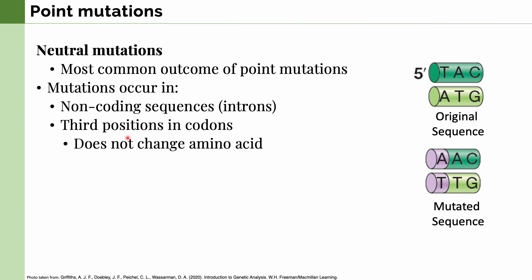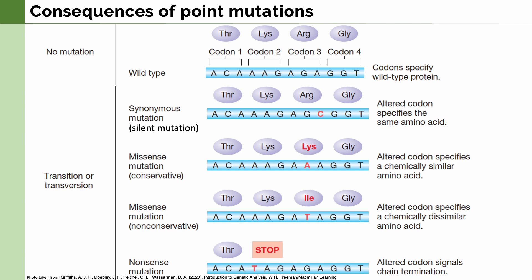As a result of neutral mutations, the amino acid coded for by the gene does not change, and they do not produce any noticeable effect on the cell. In this figure, we can see the different consequences of point mutations, starting with transitions or transversions. At the top is the original gene sequence and the corresponding amino acids. The first effect is called synonymous or silent mutations. They do not affect the cell in any meaningful way because the altered codon specifies the same amino acid — usually when the mutation is in the third position of the codon. As we can see, arginine is the amino acid in the wild type and remains arginine in the silent mutation.